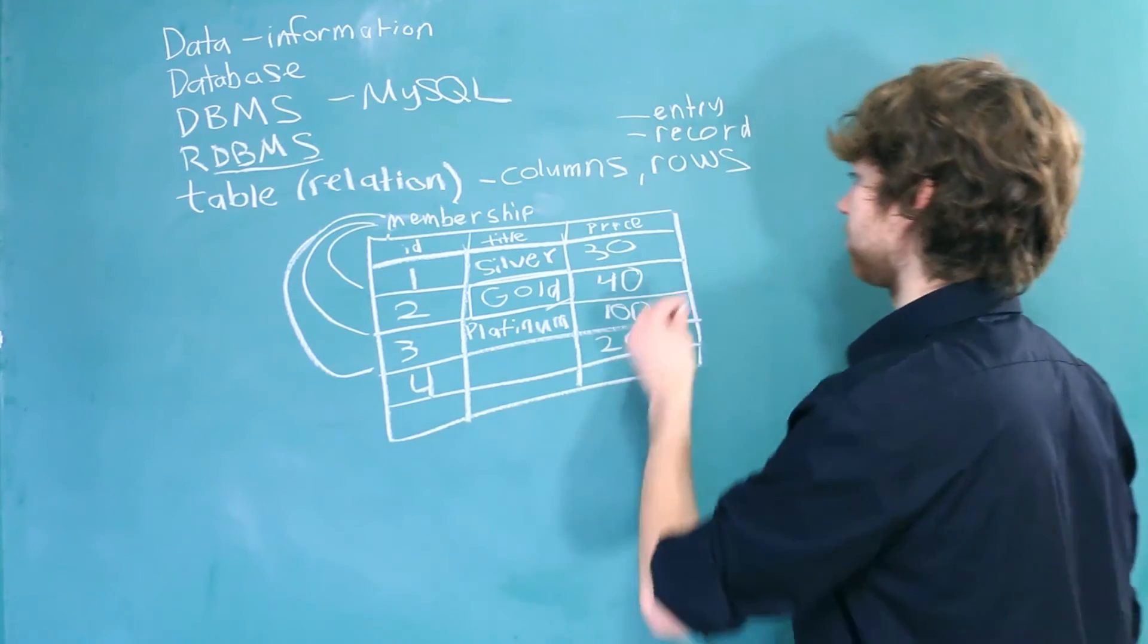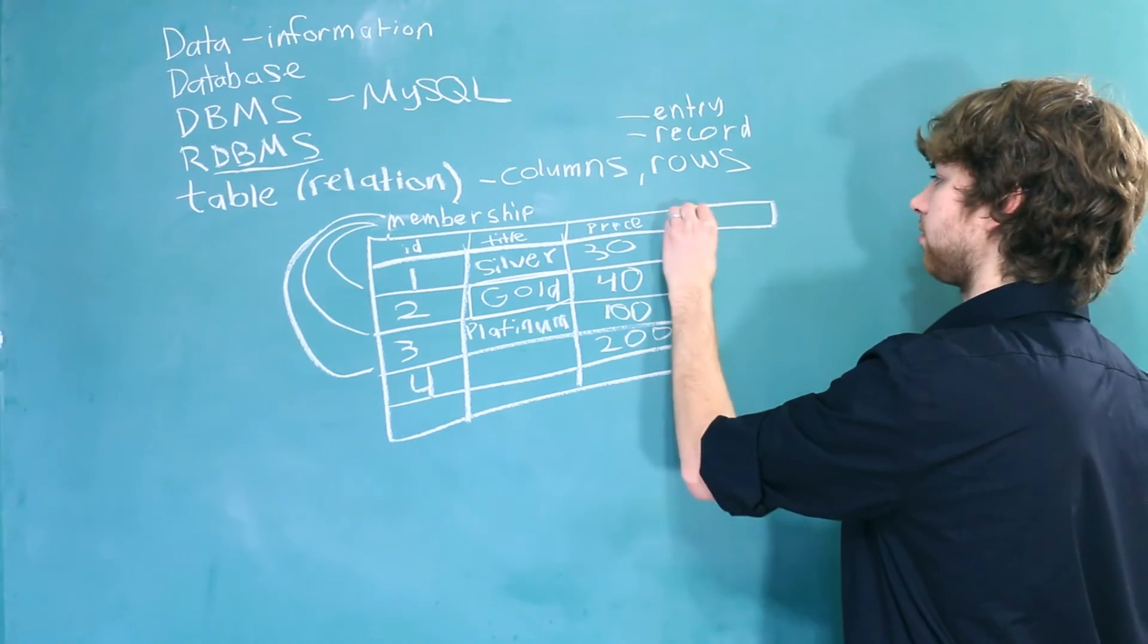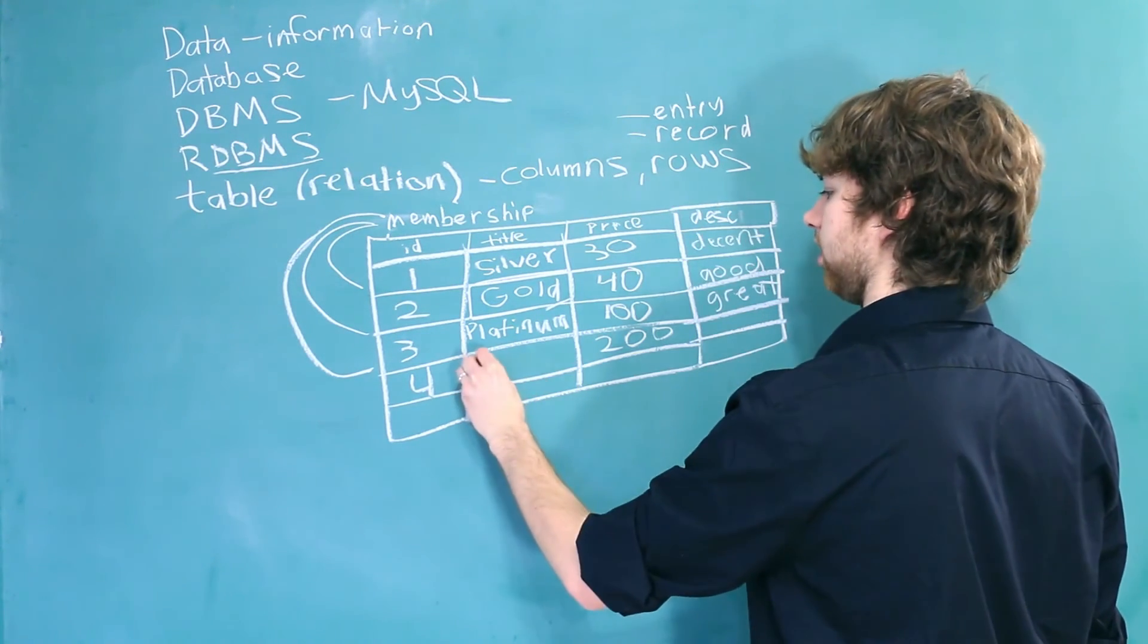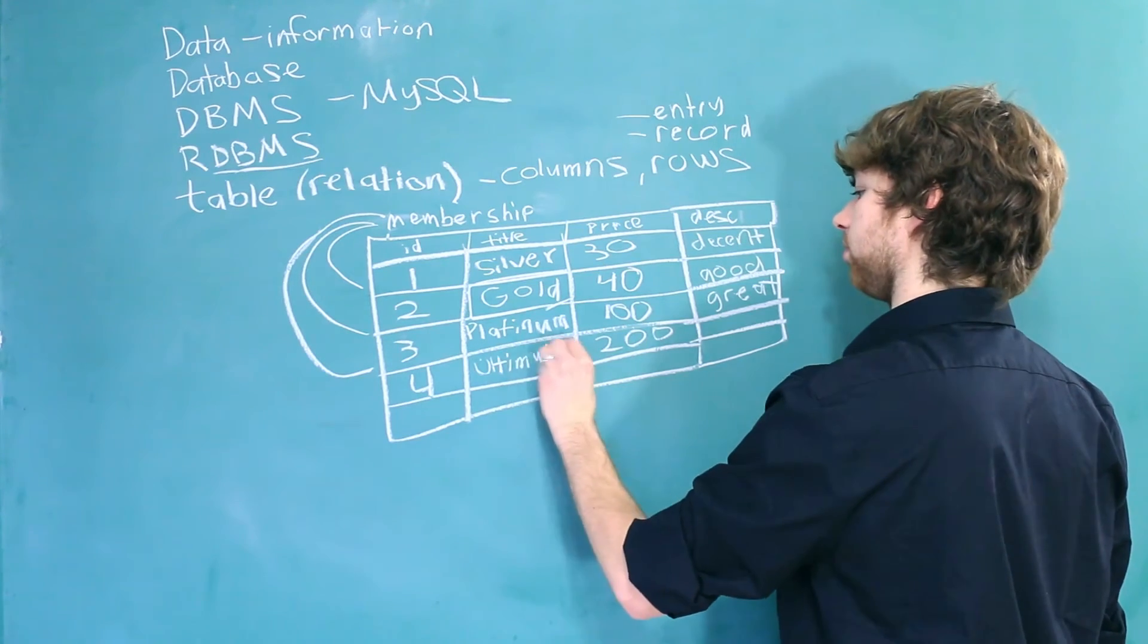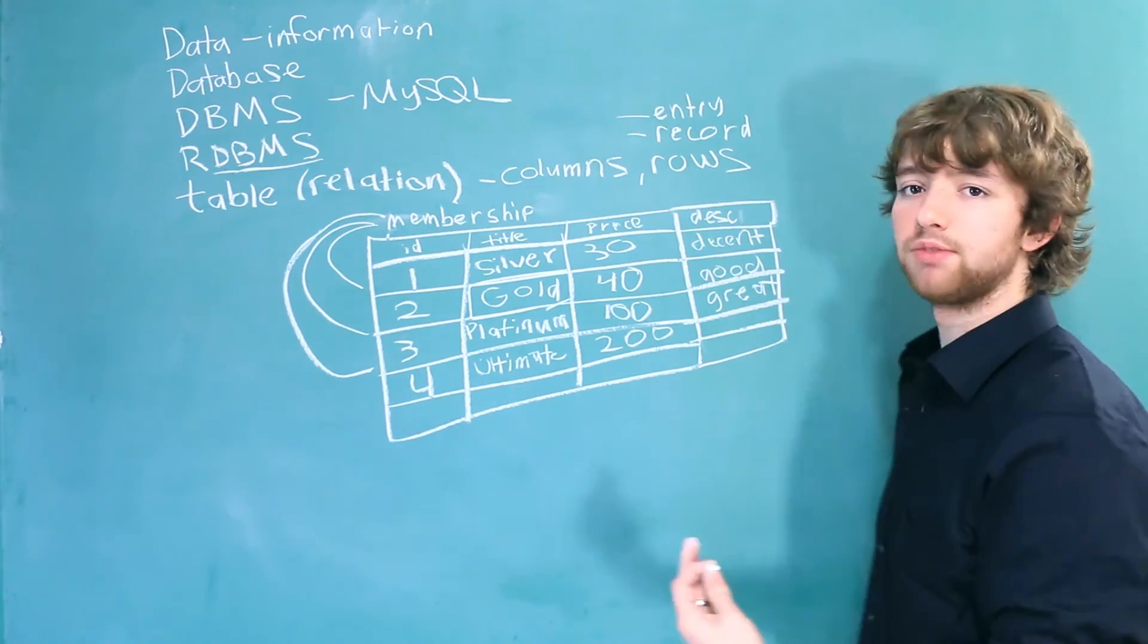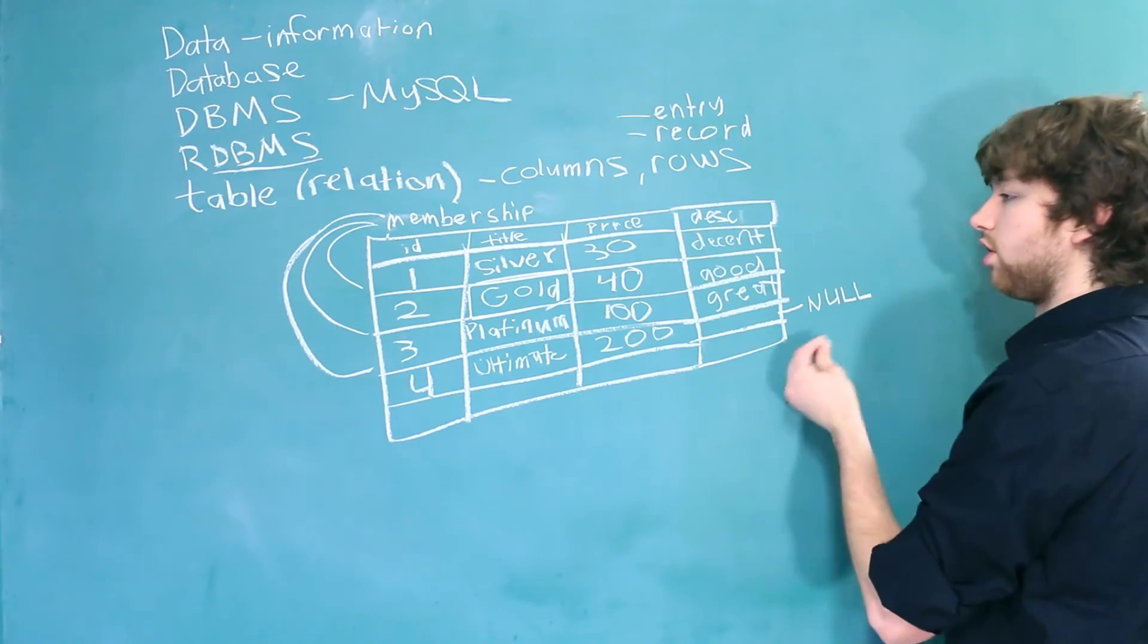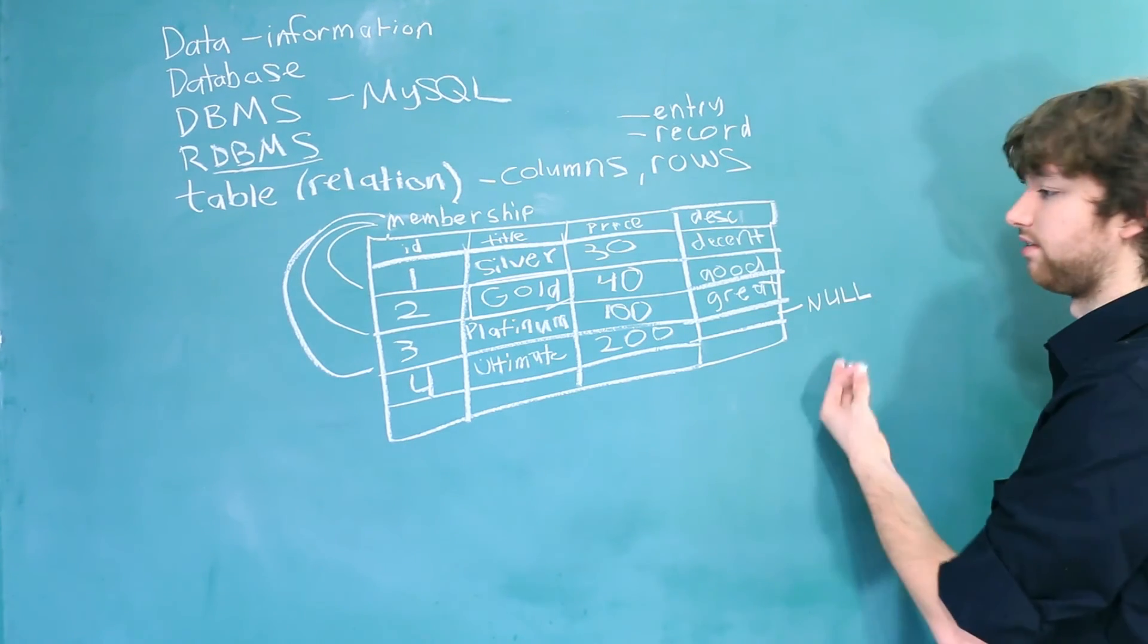But if we had a column such as description, it might make sense to leave some of these blank. So we could say this is the ultimate title. But we could leave the description empty. In this situation, you could say this is a null. A null is just an absence of a value.